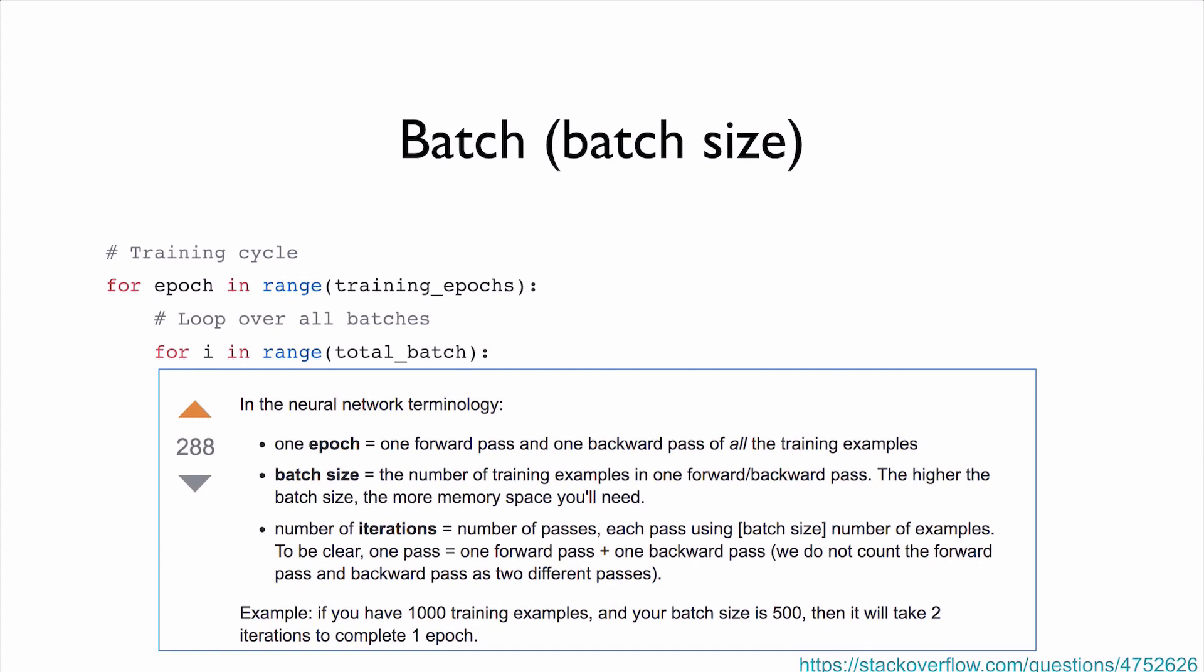More formally, we can define epoch and batch size and iterations. One epoch is that if we can cover entire data, that is one epoch. But in order to cover entire data, we have to go through many batches. So each batch covering one batch is one iteration. So for example, if we have 1000 training examples, and then our batch size is 500, then we have two batches.